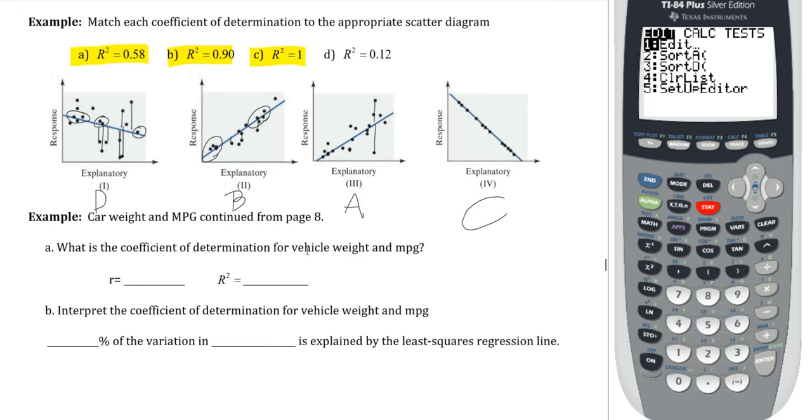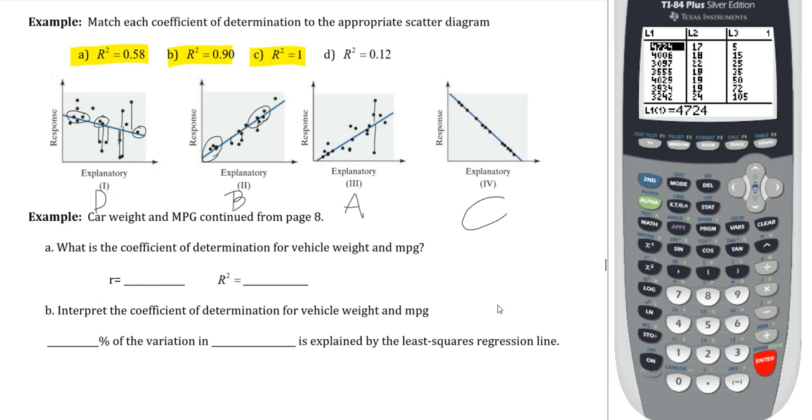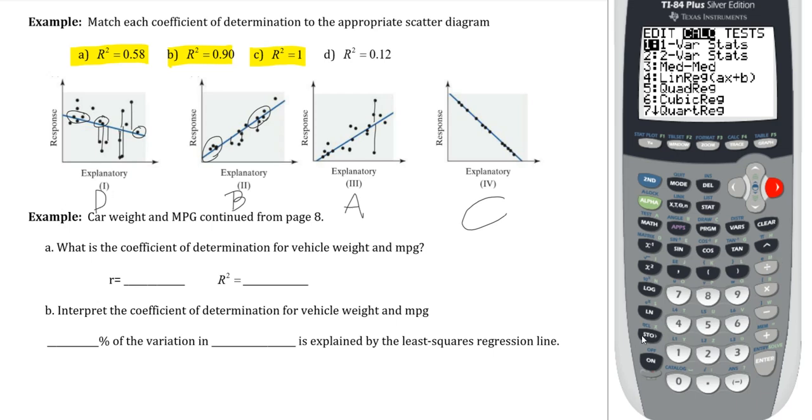Now in terms of how to calculate and interpret it, again, these three examples are going to use data from previous sections. The car weight and miles per gallon is going to use data from page 8, which I already have in list 1 and list 2. If you are following this after 4.2, you probably already have those in your calculator as well. And what we're going to do is we're going to run the linreg ax plus b on that and find our R² value. I'm going to do stat, calculate, going to run 4, which is linreg ax plus b on list 1 and list 2. So list 1 and list 2, don't need frequency list, don't need store reg eq.